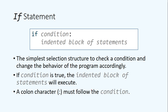The if statement is a statement in Python — and also other languages — that allows you to implement the selection structure. Let's look at the syntax. In Python, it looks like this: first we have the if keyword, followed by a space — there must be a space — after the if keyword, then followed by a condition. This condition is actually a Boolean expression.